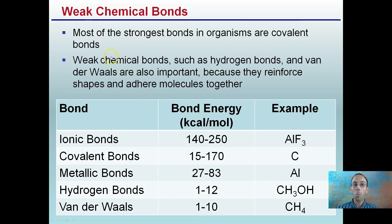Lastly, weak chemical bonds. Most of the strongest bonds in organism are covalent bonds. Ionic bonds have the strongest bond energy. We see our way that we're working down the line up here. Weak chemical bonds, such as hydrogen bonds and van der Waals, are also important because they reinforce shapes and adhere molecules together. So while these are weaker bonds, don't think that they're necessarily less important. They're very important when we start thinking about protein folding, which is important for enzymes, which is important for structure-determining function. The way a protein folds will impact its function. The way it folds may be dependent on hydrogen bonds. Even though they're weaker than ionic and covalent, they still are very important. Hopefully that was a nice general quick overview of molecules and bonds.